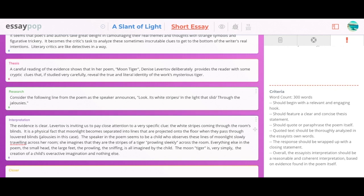The speaker in the room seems to be a child who observes these lines of moonlight slowly traveling across her room. She imagines that they are the stripes of a tiger prowling sleekly across the room. Everything else in the poem—the small head, the large feet, the prowling, the sniffing—is all imagined by the child. The moon tiger is very simply the creation of a child's overactive imagination and nothing else.